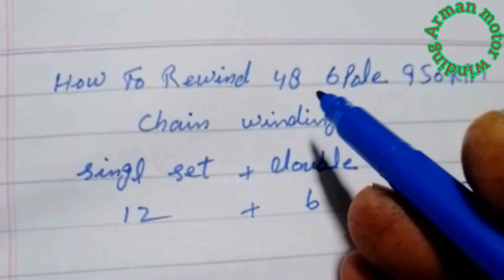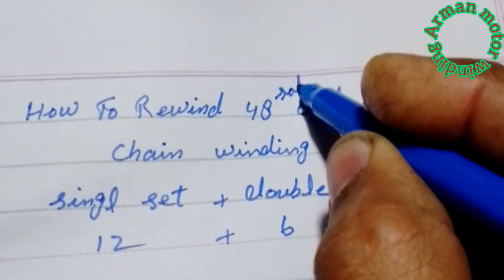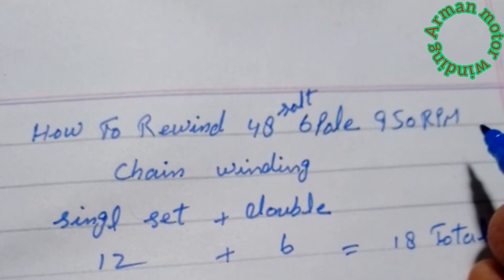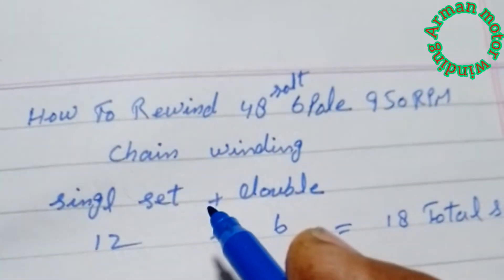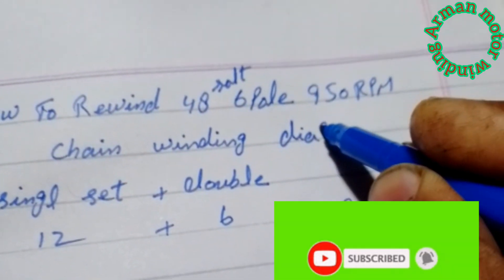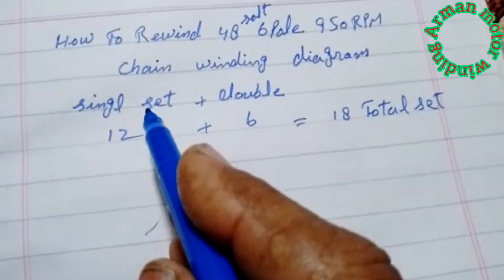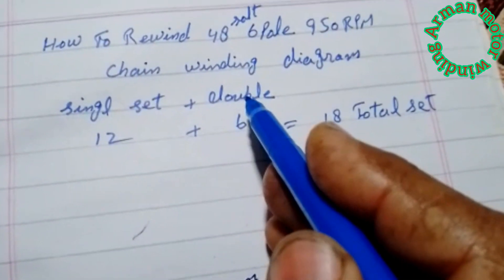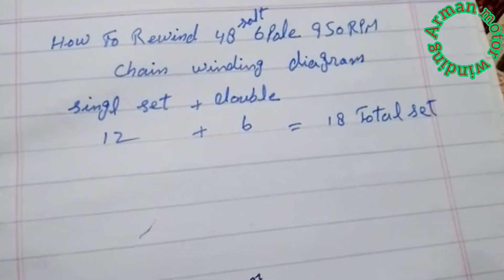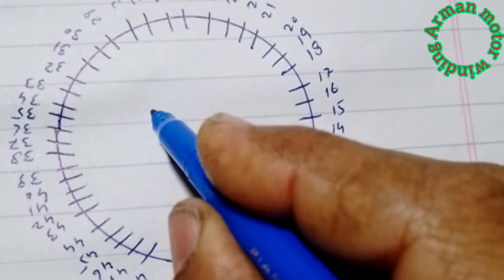How to Rewind an Armature/Stator. 6.9.5 RPM churn winding diagram: single set 12, double set 6, set 18 total set 14, large.